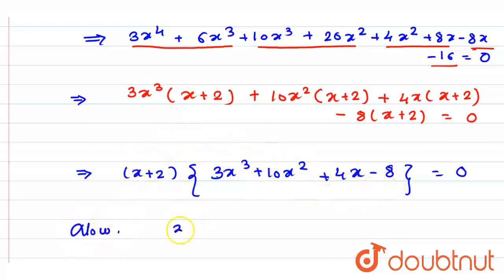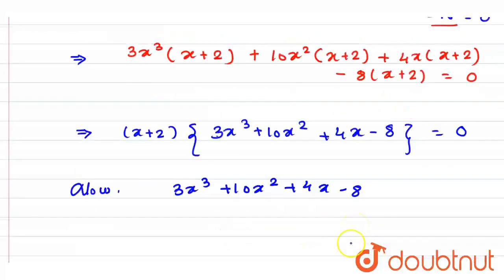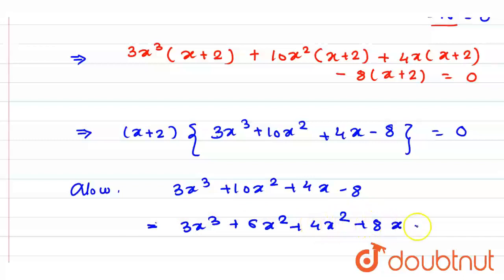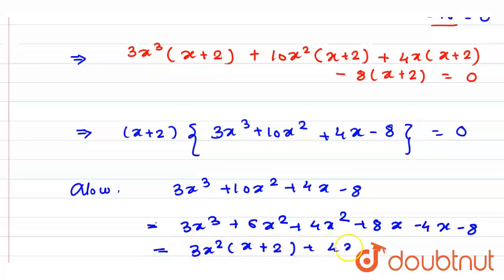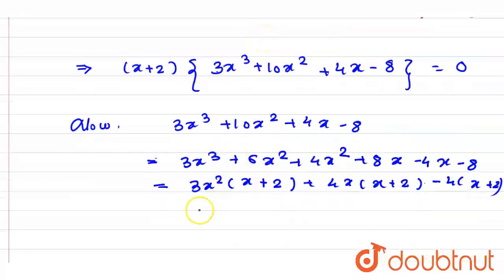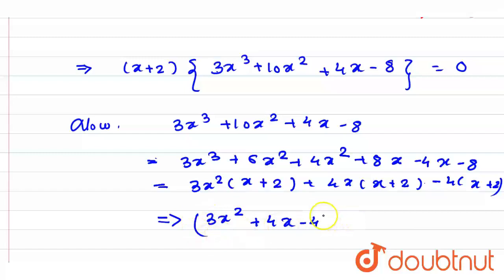3x³ + 10x² + 4x - 8 can be rewritten as 3x³ + 6x² + 4x² + 8x - 4x - 8. Taking 3x²(x + 2) + 4x(x + 2) - 4(x + 2) common, we get (x + 2)(3x² + 4x - 4).